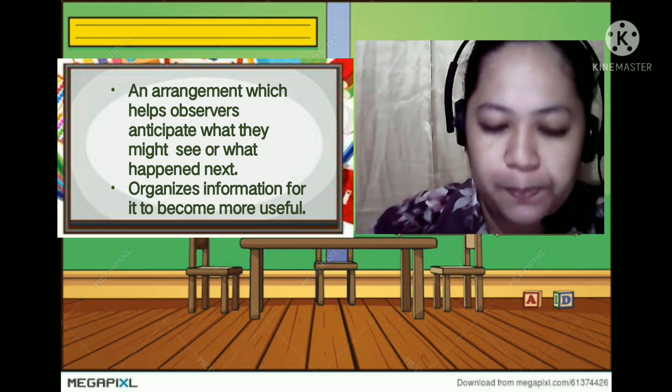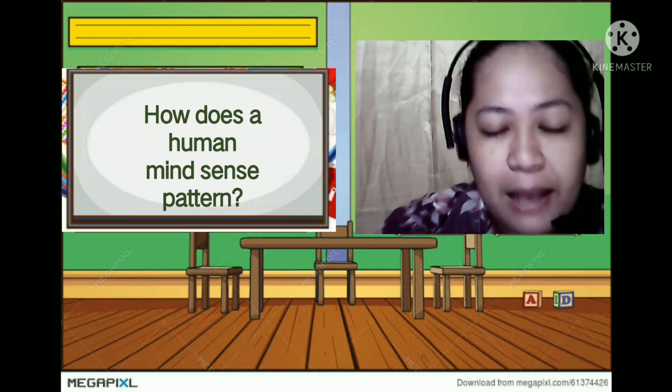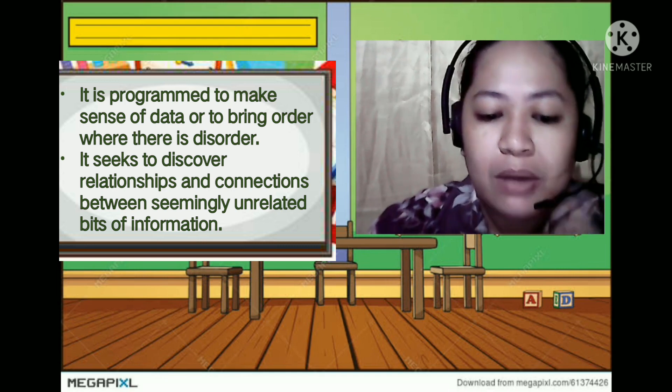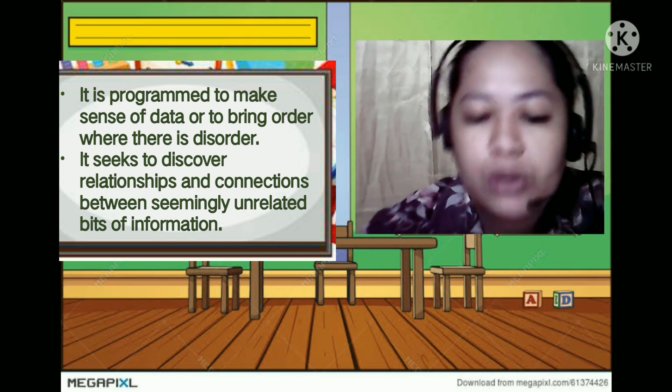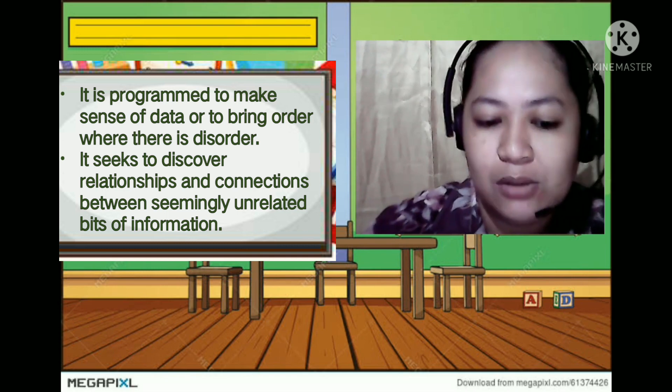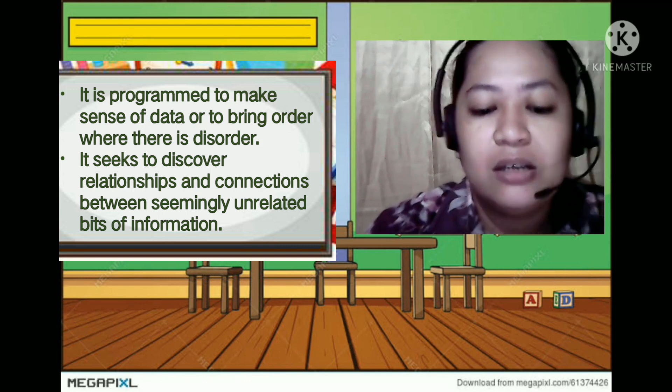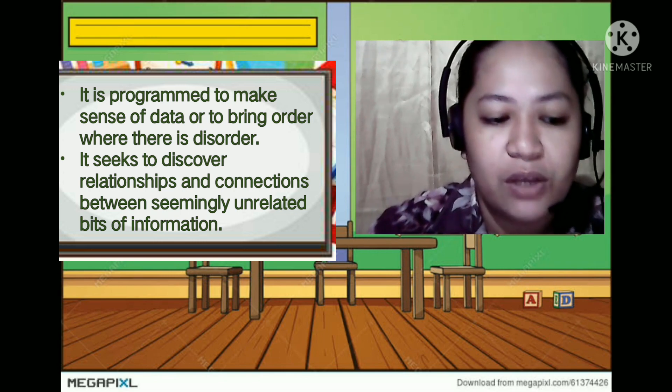So how does a human mind sense pattern? As humans, our mind is programmed to make sense of data or to bring order where there is disorder. And it seeks to discover relationships and connections between seemingly unrelated bits of information.